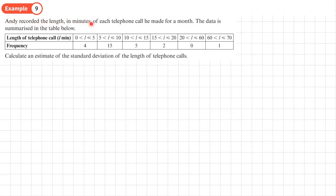Example 9. Andy recorded the length in minutes of each telephone call he made for a month. The data is summarized in the table below. Calculate the standard deviation of the length of phone calls. Here we've got grouped data, so we're going to need the midpoint for X in the calculation. Here's our formula. You can see this is going to be quite a bit of working. You might want to put it in a table, but often in questions like this they'll give you the sum of FX squared and the sum of FX.